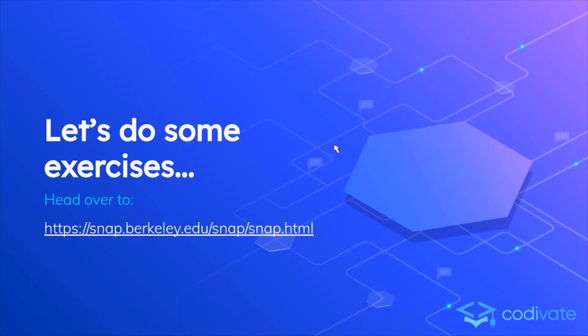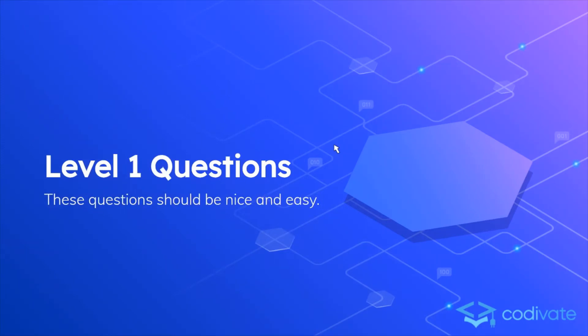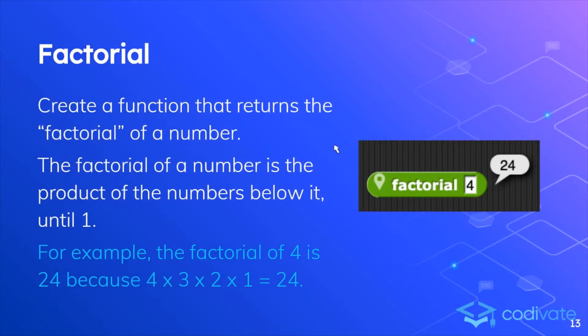So the exercises, head over to snap.berkeley.edu/snap/snap.html to complete these exercises. Level 1 exercise. These questions should be pretty easy for you. Factorial. Create a function that returns the factorial of a number. Factorial of a number is the product of all the numbers below it, until 1. If you were in your previous class, you probably know what this means. For example, the factorial of 4 is 24, because 4 times 3 times 2 times 1 is equal to 24. And we see that the reporter reports 24.